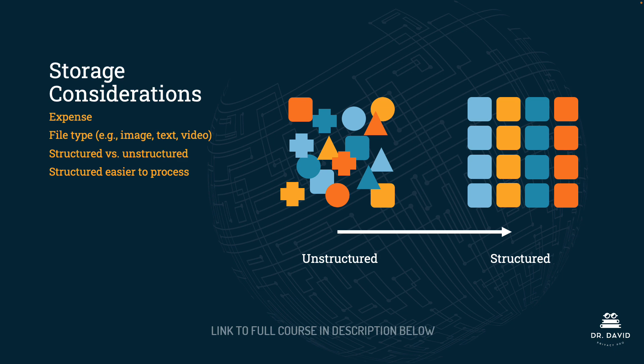Structured data is easier to process, and in an upcoming lecture we will talk more about data cleaning. For right now, we have this diagram to help us understand the difference between structured and unstructured data. On the left-hand side we have a number of different shapes, all different colors — this is unstructured data. Through data wrangling and data cleansing, we structure that data into neat rows and columns, seen on the right-hand side. That structured data is what is best for training. You do need to understand these terms for the exam — structured data is easier for models to process.